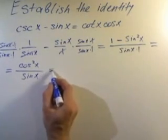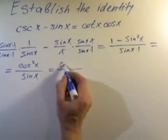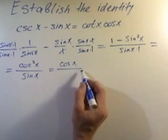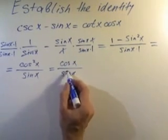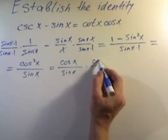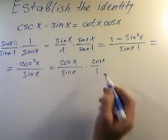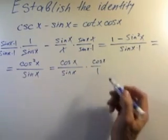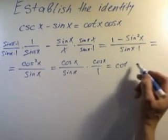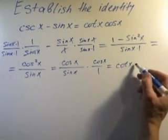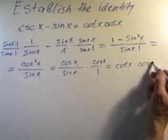Which equals cosine x over sine x times cosine x over 1, which equals cotangent x times cosine x.